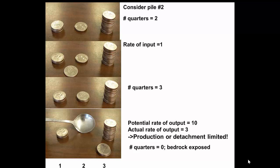Now, here's the case where we still have only two quarters in pile number two, and we bring one in, so we have three there. But then we might say, well, we could erode as many as ten, but there's only three, so the actual rate of output is three relative to the potential rate of output.